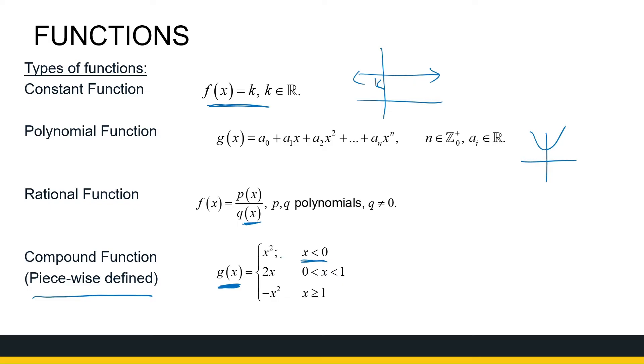For all x's less than 0, this is how my function behaves. But between 0 and 1, this is how my function behaves. And for all values greater than or equal to 1, this is how my function behaves. Now, we have to just take note. If this is a function, it has to have restricted to the fact that it has to behave like a function. So each input number can only be mapped onto one output number. So we're going to keep that in mind.